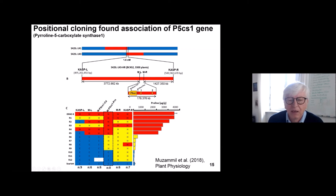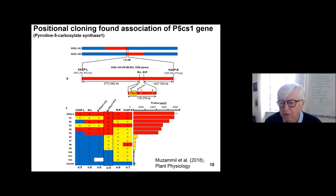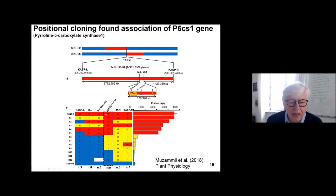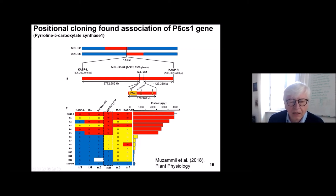We constructed two markers inside the candidate gene, and then tested several thousand recombinants — doing another round of crossing, testing thousands of offspring, and analyzing those showing recombination in this small region. Here is the outcome: the red genotype represents the wild form and the blue represents the cultivated form, with differences indicating recombination events in that region.